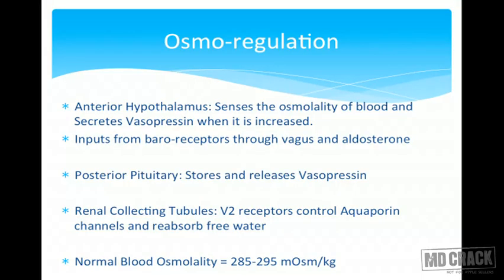We have anterior hypothalamus which has sensors outside the blood-brain barrier in contact with the smallest capillaries. They can sense changes in osmolality of blood, and in response to increased osmolality, anterior hypothalamus produces vasopressin. It's then carried to the posterior pituitary and stored and released. Anterior hypothalamus also gets inputs from baroreceptors in the neck and clues from the aldosterone pathway and kidney.